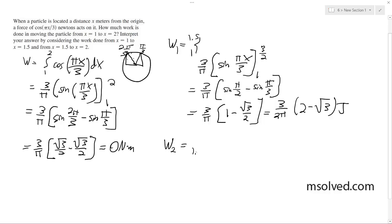We're going from 1.5 to 2. It's the same thing. You pretty much just plug in for the integral part, so we already found the integral on the very first part. So 3 over pi sine of pi x over 3